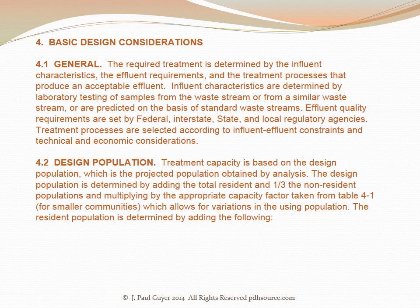The required treatment is determined by the influent characteristics, the effluent requirements, and the treatment processes that produce an acceptable effluent. Influent characteristics are determined by laboratory testing of samples from the waste stream or from a similar waste stream, or are predicted on the basis of standard waste streams. Effluent quality requirements are set by federal, interstate, state, and local regulatory agencies. Treatment processes are selected according to influent and effluent constraints and technical and economic considerations. Treatment capacity is based on the design population, which is the projected population obtained by analysis. The design population is determined by adding the total resident and one-third the non-resident populations and multiplying by the appropriate capacity factor from Table 4-1 for smaller communities, which allows for variations in the using population.